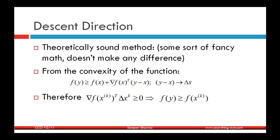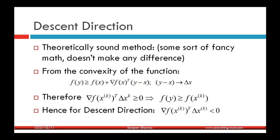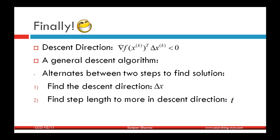Therefore, if ∇f(x_k)ᵀ Δx_k ≥ 0, it means f(y) ≥ f(x_k), so to decrease the function value, ∇f(x_k)ᵀ Δx_k must be less than zero. Hence, the descent direction Δx should make an obtuse angle with the gradient of the function. Finally, we can say that the descent direction must satisfy ∇f(x_k)ᵀ Δx_k < 0 — it should point away from the gradient direction.